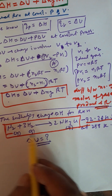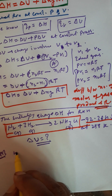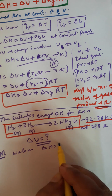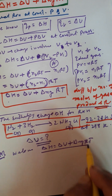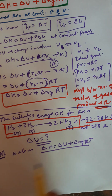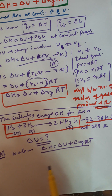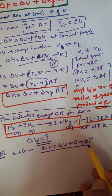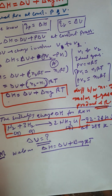First of all हमने reaction लिख ली। Formula हमारे पास पता है: we know that ΔH = ΔU + ΔNgRT। इसमें हम देखते हैं क्या क्या given है — ΔH दिया है, ΔU निकालना है, R constant है, temperature given है, ΔNg निकालना है। तो देखो ΔNg निकालने का तरीका देखो।